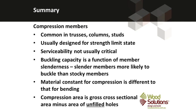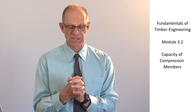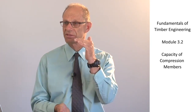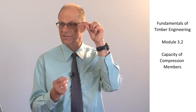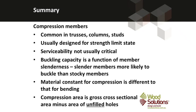In summary, compression members are commonly used in trusses, columns, and studs. They're usually designed for the strength limit state, and it's rare that the serviceability limit state governs. Buckling capacity is really important and is related to slenderness, which is dictated by the length of the compression member and in particular the distance between lateral restraints. The material constant used to evaluate k12 is different for compression members than for bending members — row C is different to row B. Finally, the compression area is the gross cross-sectional area minus the area of unfilled holes.